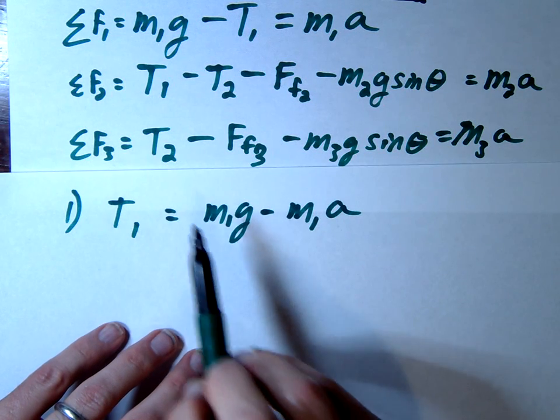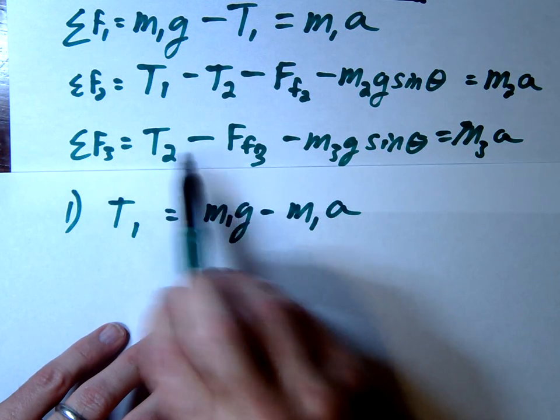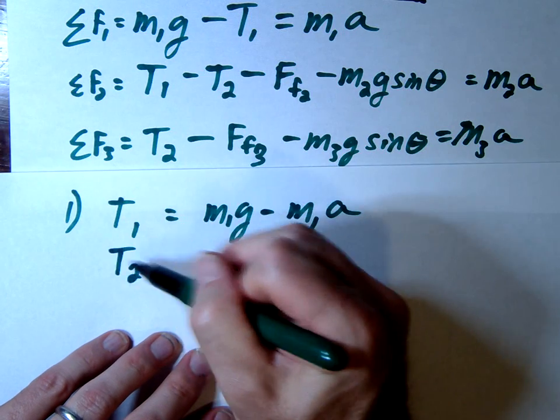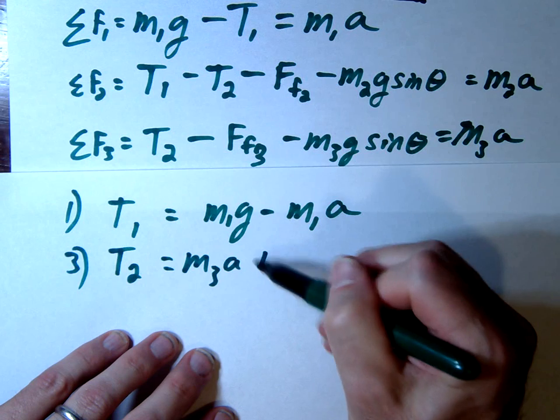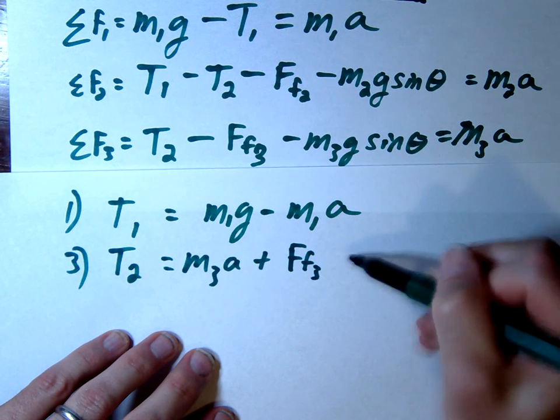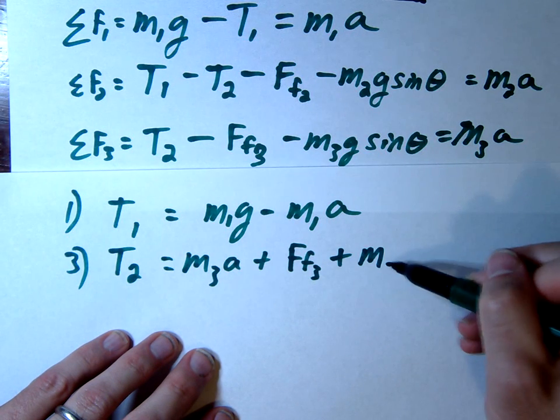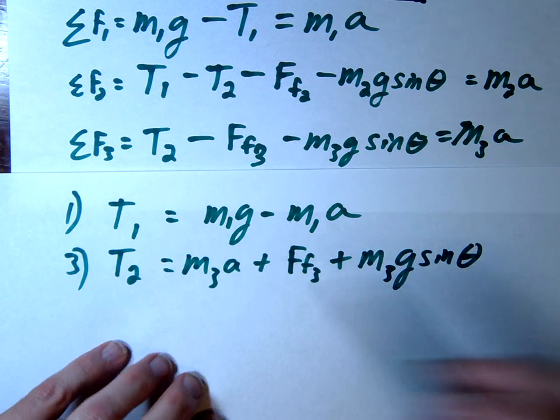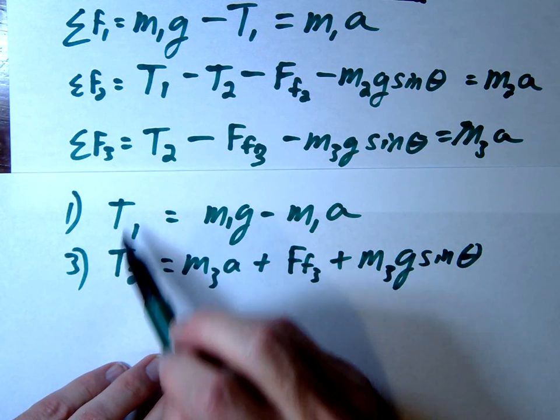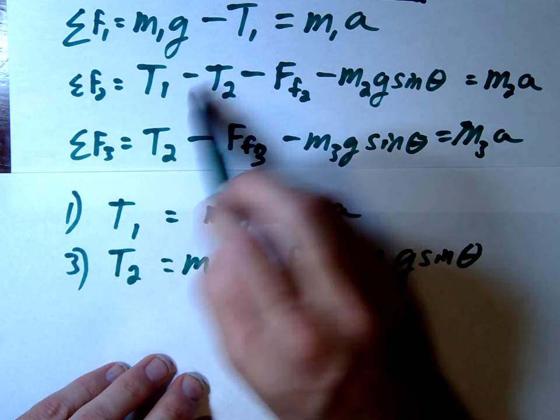And let's take another one. Let's take this tension down here. So this T2, this is equation 3, should equal M3A plus friction 3 plus M3G sine. And then we're just going to substitute both of these into this equation up here.